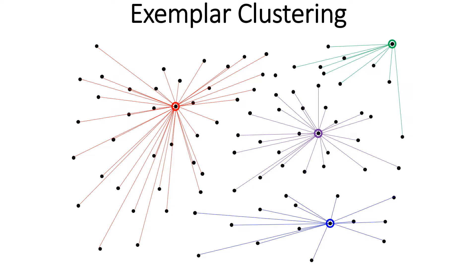This is the outcome of Exemplar Clustering. Points are assigned to exemplars. The exemplars are shown within circles. There are four exemplars here, colored red, blue, purple, and green. The rest of the points are assigned to any of the four exemplars.